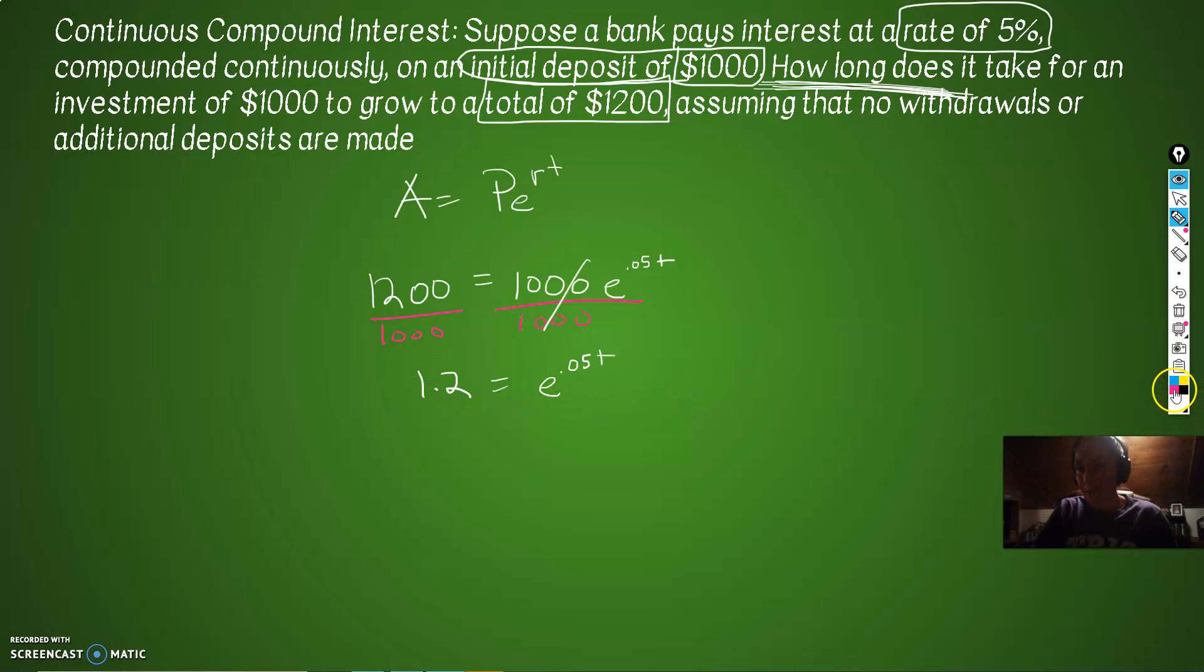And now what do we do? How do we get rid of the E? What do we do? We do the LN of both sides. LN, E, go poof. So we have 0.05T now on the right equals LN of 1.2, whatever that terrible decimal is going to be. Divide both sides by 0.05 because we're after T. You're going to get real comfortable with ugly decimals if you do these enough.